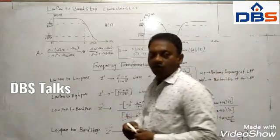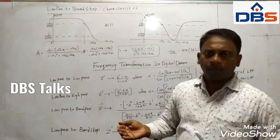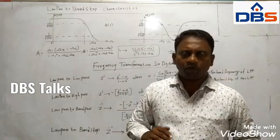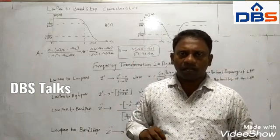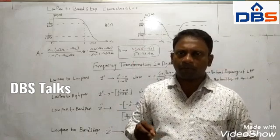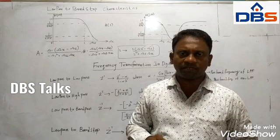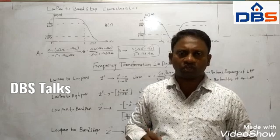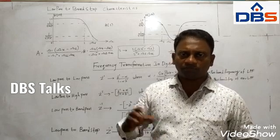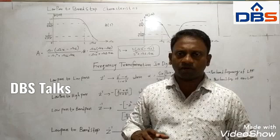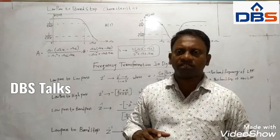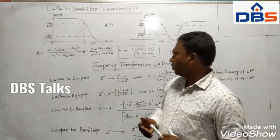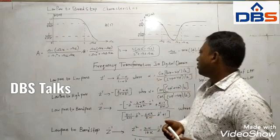So like this, we have seen four transformations in the analog domain: low-pass to low-pass transformation, low-pass to high-pass transformation, low-pass to band-pass transformation, and low-pass to band-stop transformation.